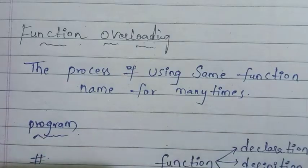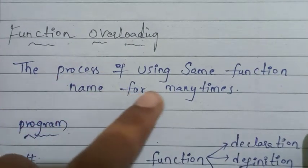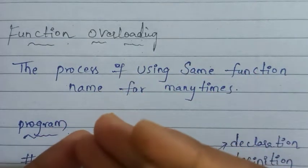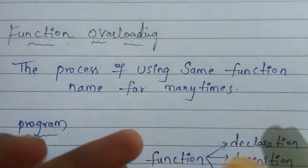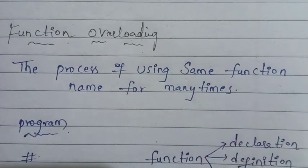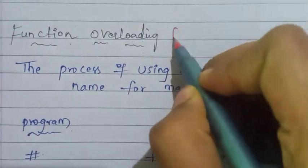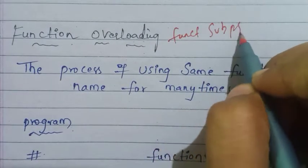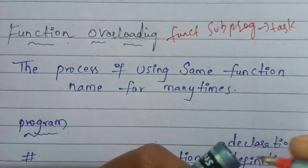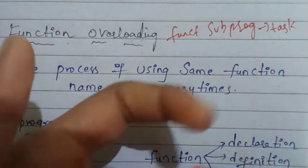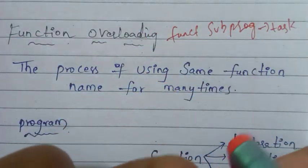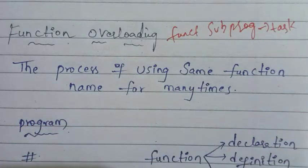Function overloading — the definition: it is the process of using the same function name many times. Basically, a function is a subprogram which performs a particular task. So this is a subprogram — it performs a particular task such as finding a sum or multiplication.